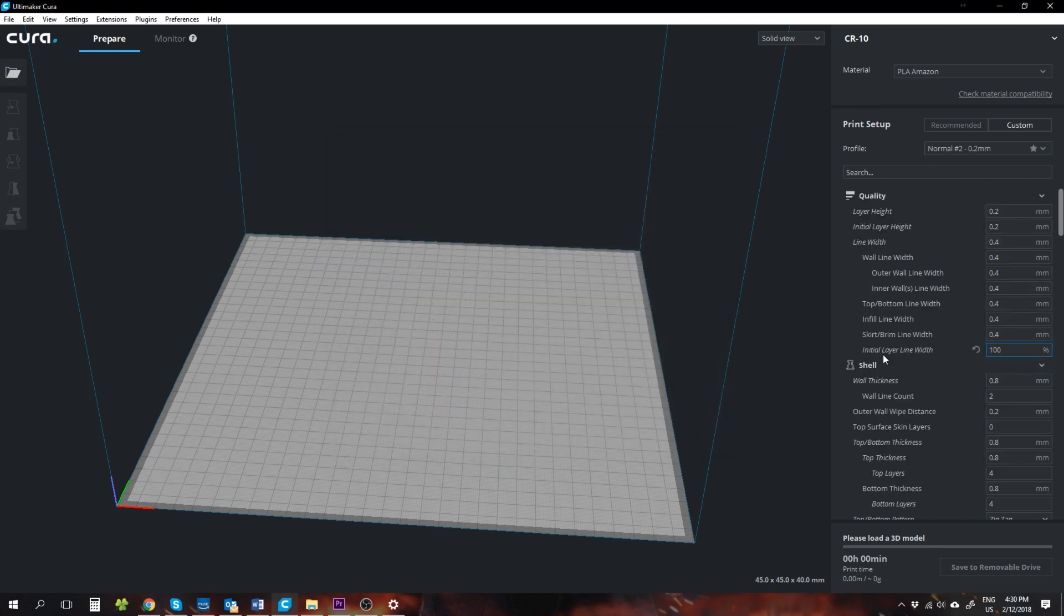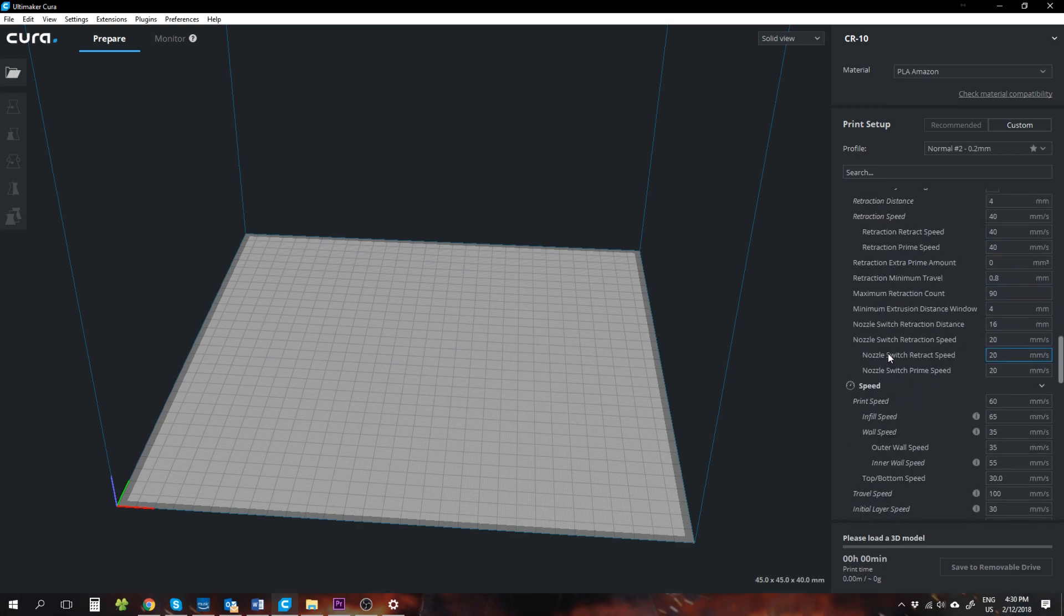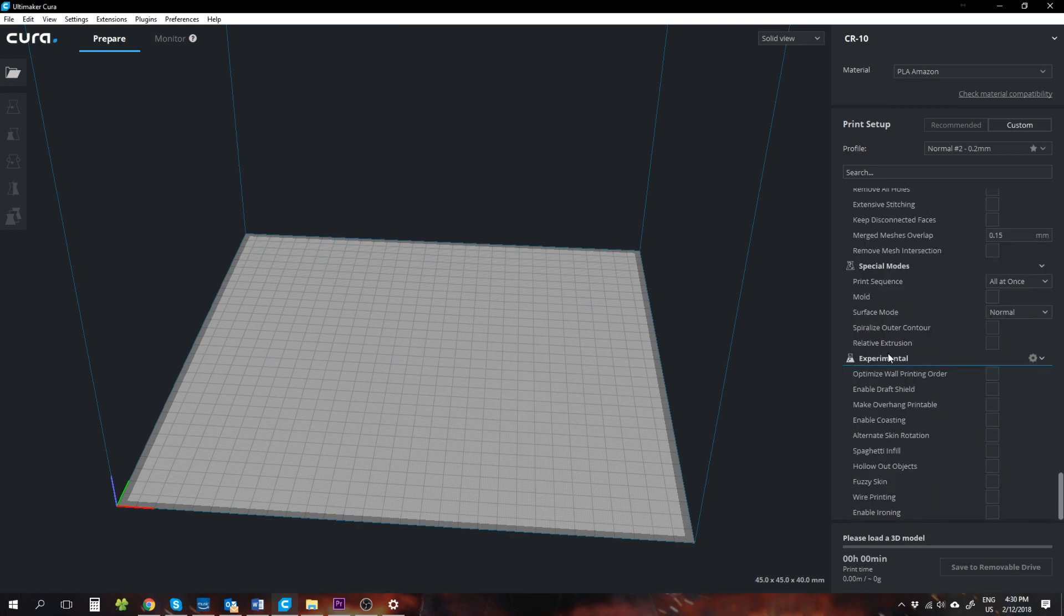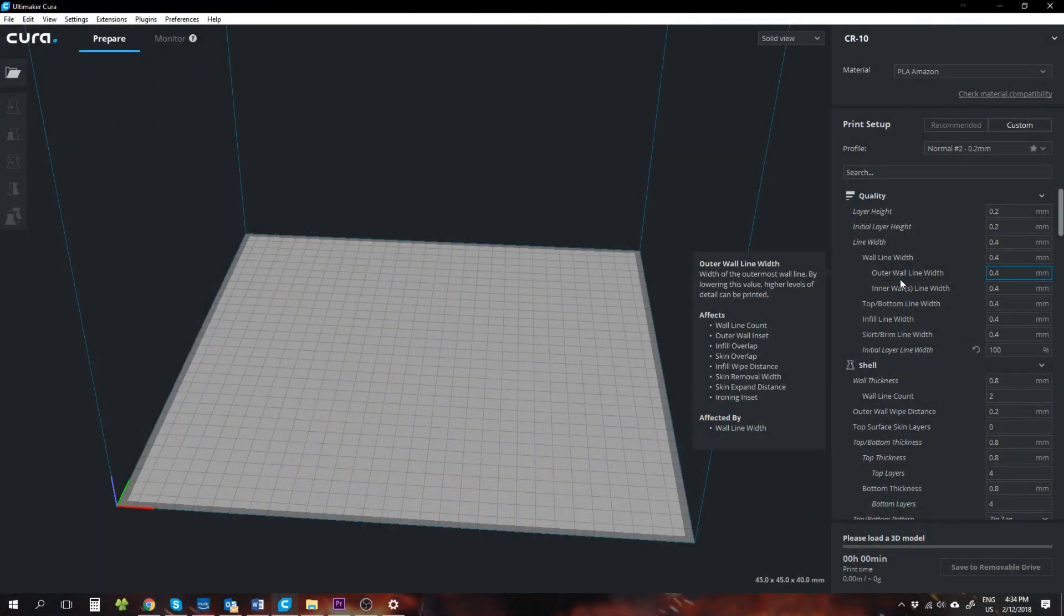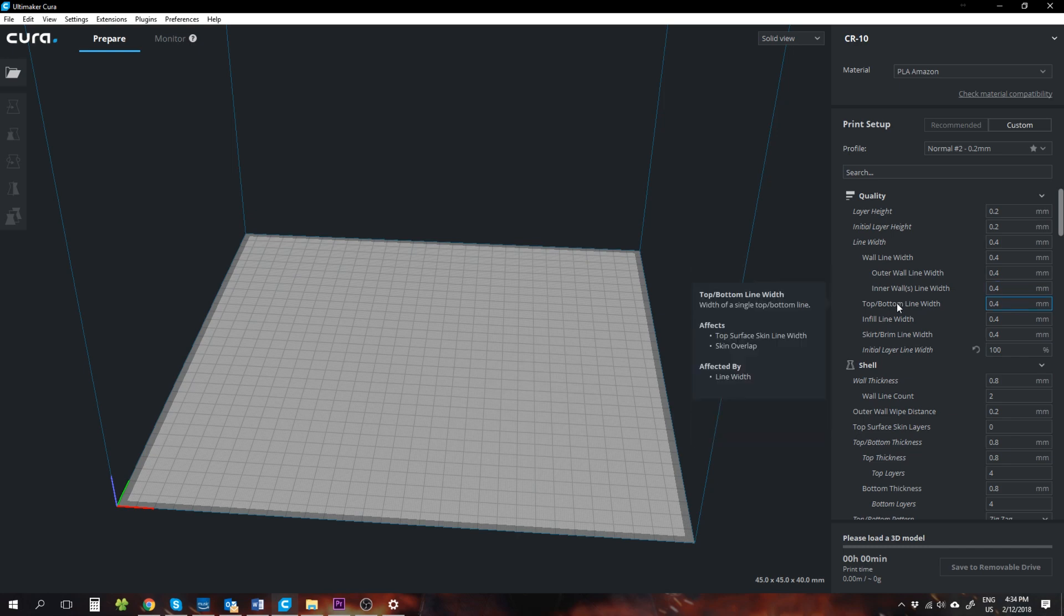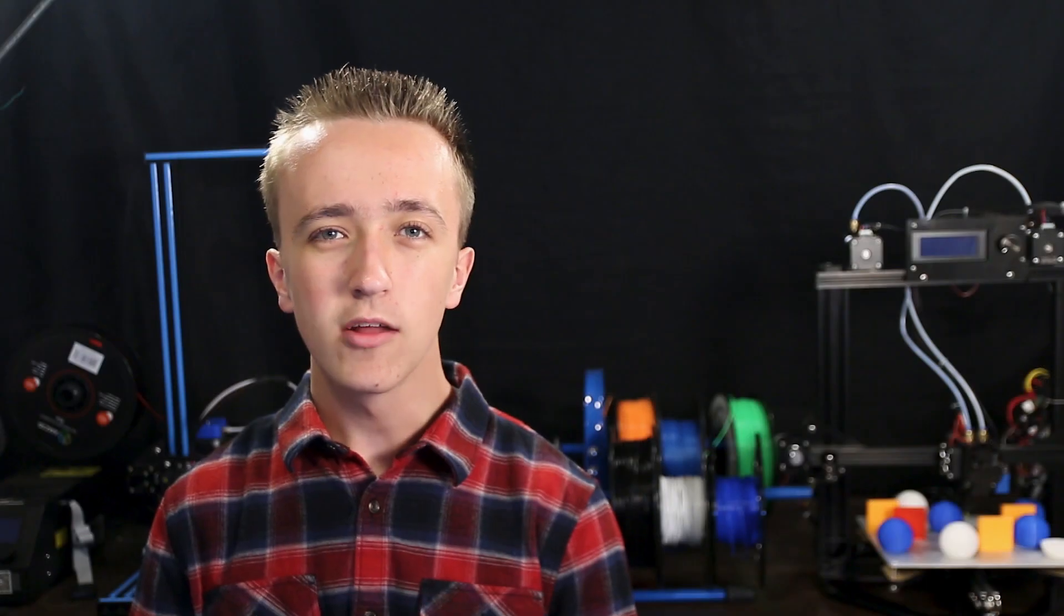This will show all the different settings that you can change and this might be a little bit overwhelming at first, but in this video I'm going to explain some of the more important ones to you. Also, if you move your mouse over the settings, a little window pops up that explains very briefly what the setting is all about and how you should change it. And if you change something that you want to change back, you can always click that little circle arrow thingy and that will revert the setting to the standard for that profile. But let's not waste any more time and get right into it.